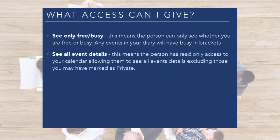The second level is 'See all event details'. This means the person has read-only access to your calendar, allowing them to see all event details excluding those you have marked as private.